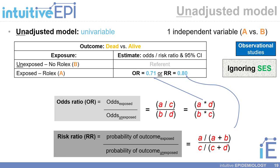Similarly, we could use a simple unadjusted or univariable statistical model to estimate these numbers. Our binary exposure variable codes people as having a Rolex versus not, and we could use a given model to estimate odds ratios or risk ratios. In this simple unadjusted model, you would estimate the same odds ratio or risk ratio quantifying the relationship between owning a Rolex watch and mortality, but this univariable model also ignores the impact of socioeconomic status and its role as a confounding variable.